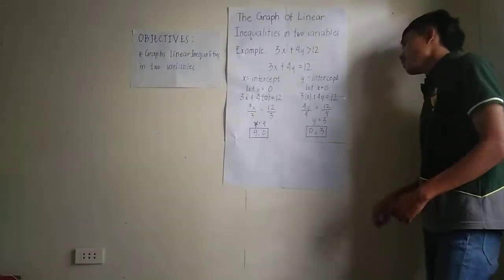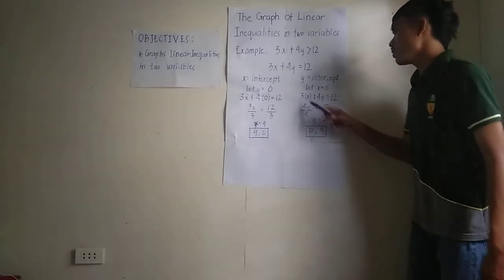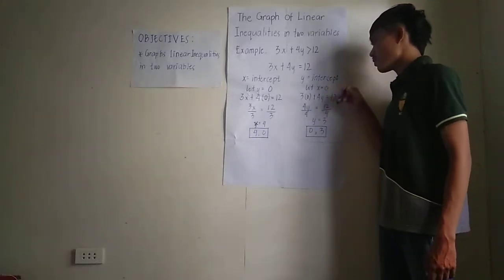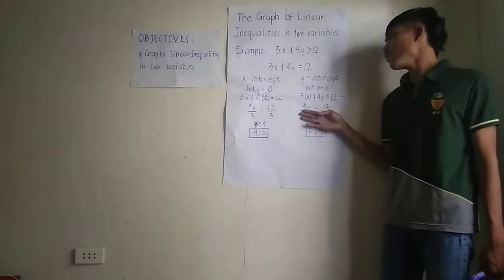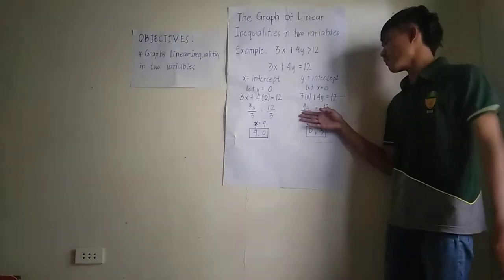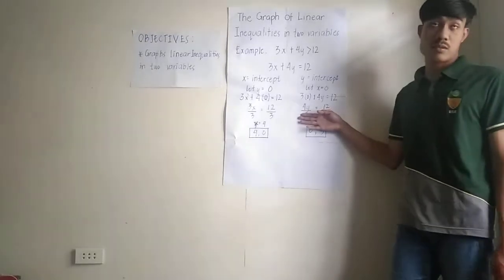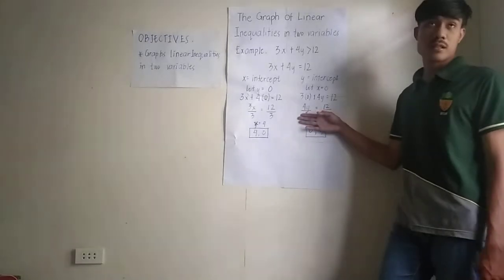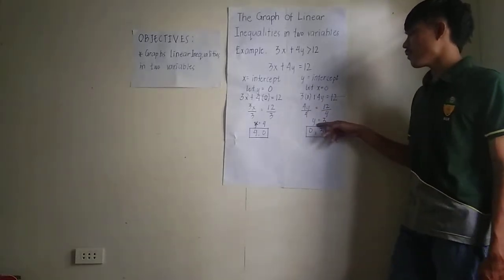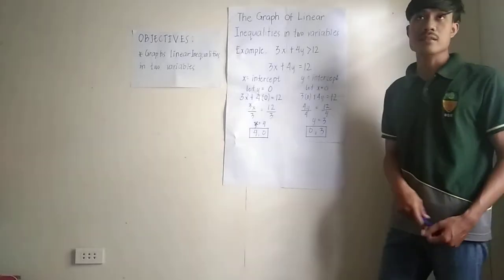Now let's proceed to the y-intercept. Let x = 0. So 3(0) + 4y = 12, which gives us 4y = 12. We divide both sides by 4, so y = 3. Canceling and bringing down: 12 divided by 4 equals 3. So our y-intercept is (0, 3).